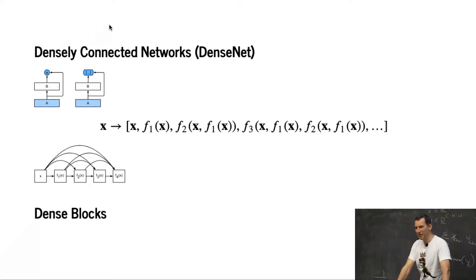Let's look at dense nets in practice. Remember, this is essentially this function expansion: x, f1 of x, f2 of x and f1 of x, f3 of x, and so on.